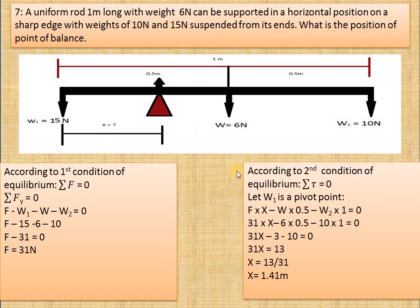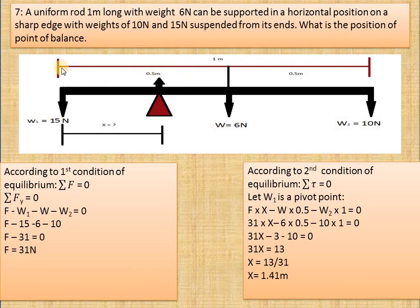For the edge torque, the force is F, multiplied by its moment arm X — this distance from the left end — and it is positive because the edge force will produce anti-clockwise rotation. When we talk about the weight of the rod, because W1 is the axis of rotation, the weight of the rod produces clockwise rotation. Its moment arm is 0.5 meters because the total length is 1 meter and the weight acts exactly at the center. Clockwise torques are considered negative, so this term is negative. W2 and its moment arm: from the W1 pivot point, the momentum arm for W2 is 1 meter, covering the full length of the rod.